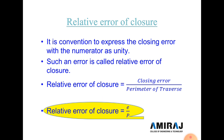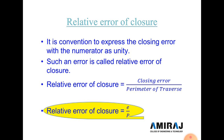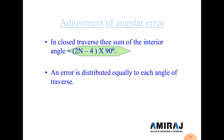Now, relative error of closure: it is convention to express the closing error with a numerator as unity. Such a ratio is called the relative error of closure. Relative error of closure equals closing error divided by perimeter of the traverse. In short form: closing error E = √(ΣL² + ΣD²) and perimeter is capital P, so relative error of closure = E / P.